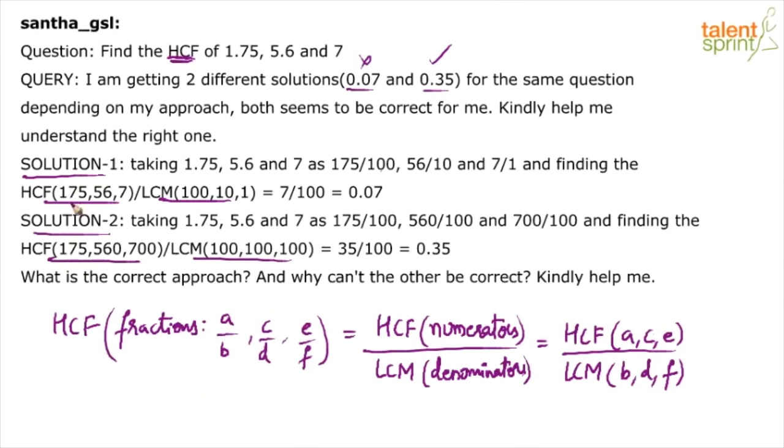So, that is what he was doing here. Those who have not followed, HCF of numerators, 175, 56, 7, LCM of denominators, 100, 10, 1. Similarly, in this case also, he has taken 175 by 100, 560 by 100, 700 by 100. So, numerators are 175, 560, 700. Denominators are 100, 100, 100.